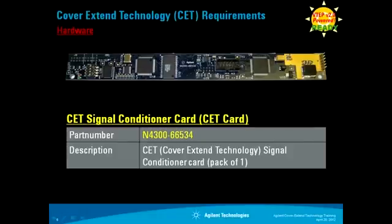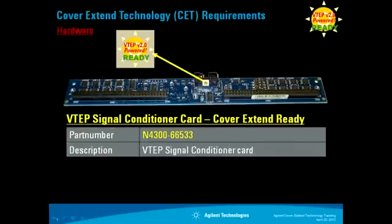This shows the picture and Agilent Part Number of the CET Signal Conditioner Card, as well as the picture and Agilent Part Number of the VTAP Signal Conditioner Card. Notice that there is a VTAP V2 Power Ready label on the VTAP Max Card, indicating it is ready for use with CET.